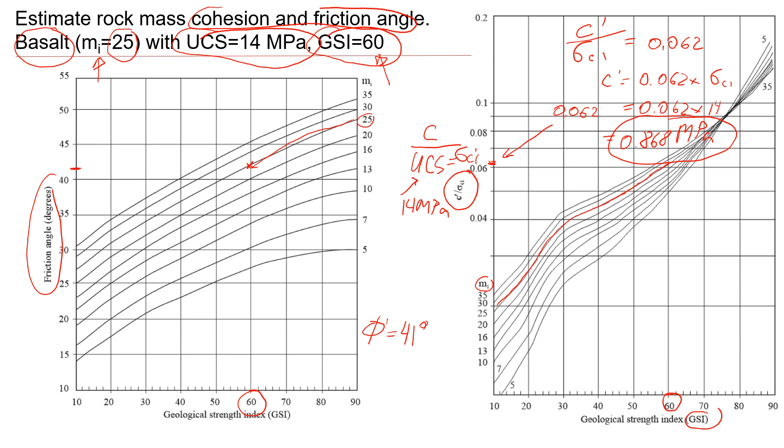Well, for fresh basalt, this value is pretty low. But as you see, we're dealing with probably weathered basalt because this value is 60, which is pretty low. And this unconfined compressive strength is only 14 MPa. So typically the value of fresh basalt can be more than 100 MPa. So this kind of makes sense. And these are the values that you can use for slope stability analysis.